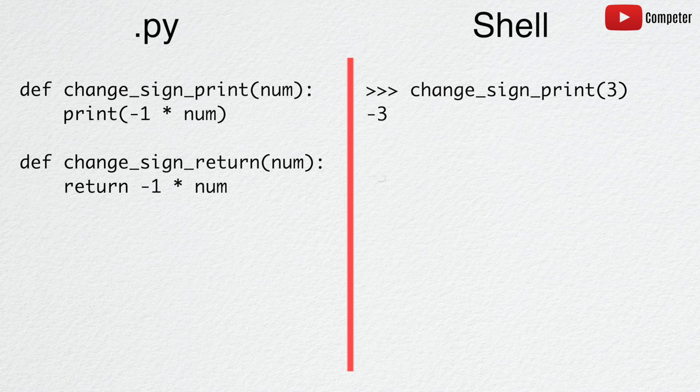However, calling change_sign_return with the same argument also prints negative 3 to the shell.